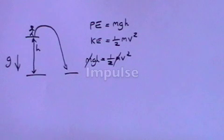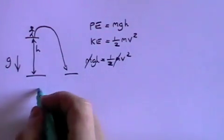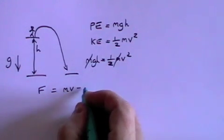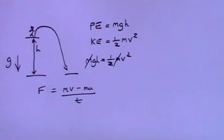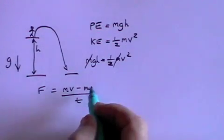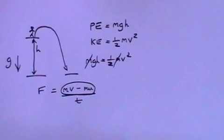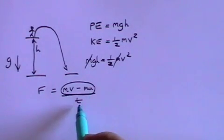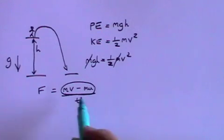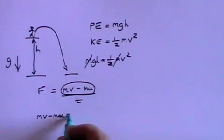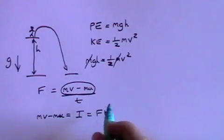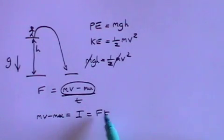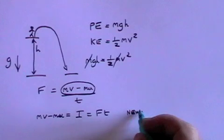Now I want to look at impulse, which is the change of momentum. Force is the rate of change of momentum — mv minus mu divided by t. The change in momentum itself is mv minus mu. So mv minus mu, which is the impulse, equals force times time. The units of impulse are Newton seconds.